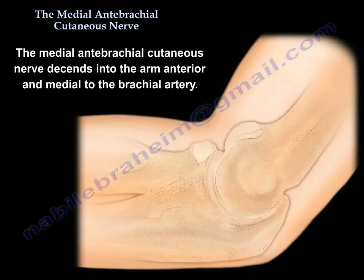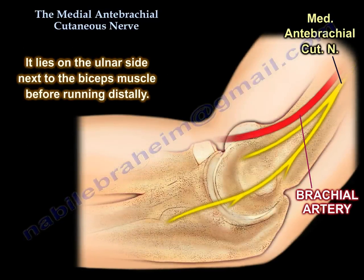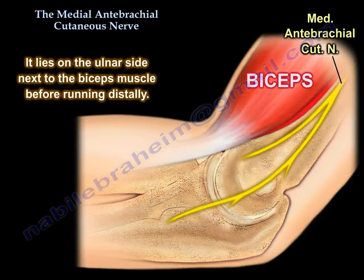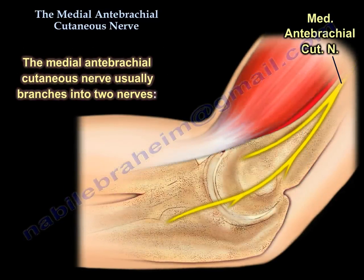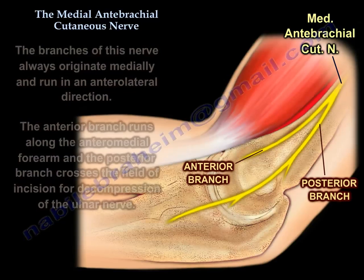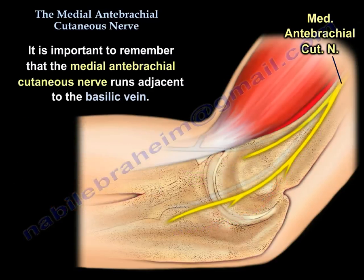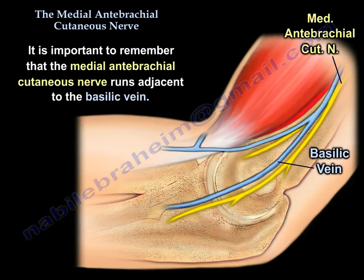The Medial Antibrachial Cutaneous Nerve descends in the arm anterior and medial to the brachial artery. It usually branches into two nerves — the anterior branch and posterior branch — just proximal and anterior to the medial epicondyle. The branches always originate medially and run in an anterolateral direction. The anterior branch runs along the anteromedial forearm, and the posterior branch crosses the field of an incision for decompression of the ulnar nerve and can be injured at that site. It is important to remember that this nerve runs adjacent to the basilic vein.